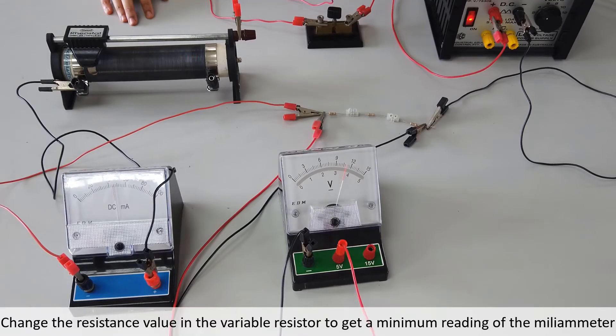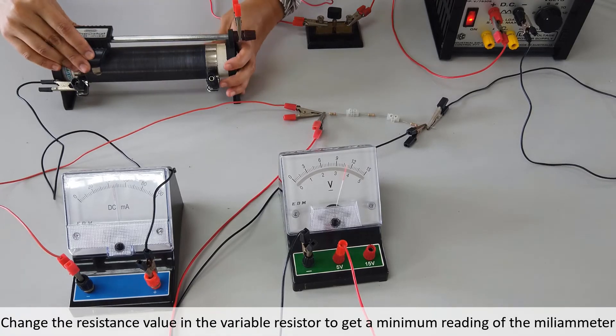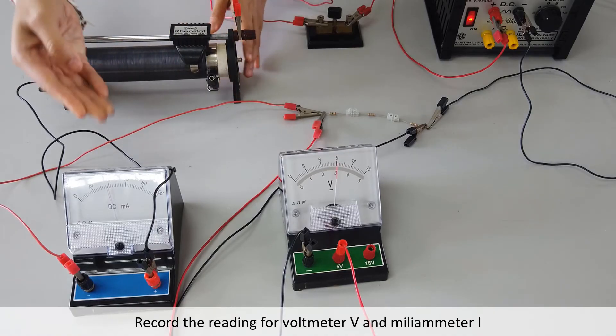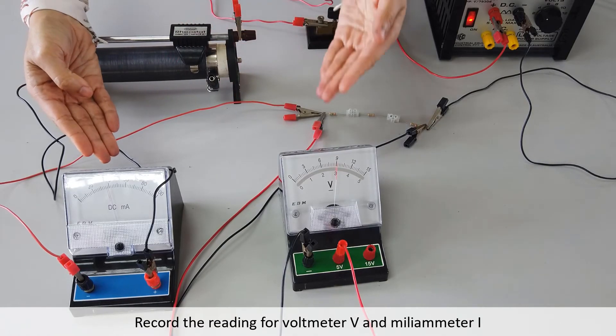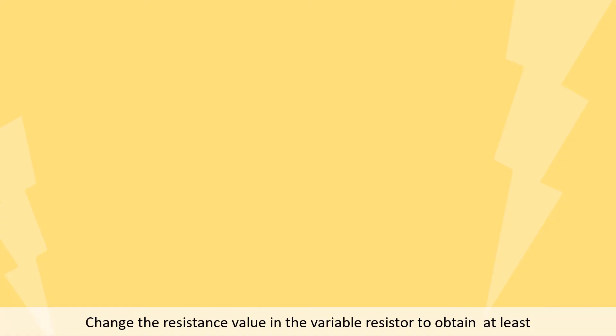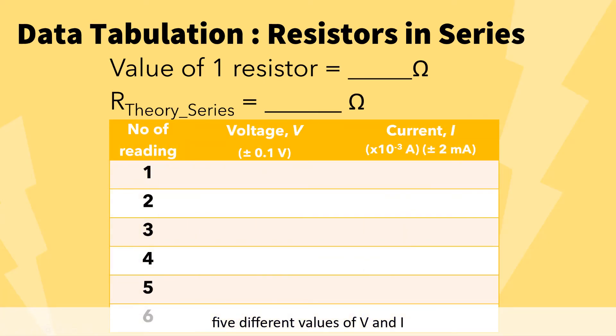Change the resistance value in the variable resistor to get a minimum reading of the milliammeter. Record the reading of the voltmeter V and the milliammeter I. Change the resistance value in the variable resistor to obtain at least 5 different values of V and I. Tabulate your data.